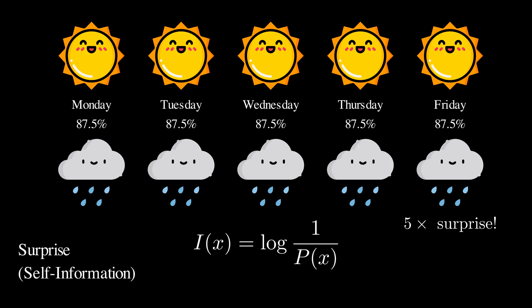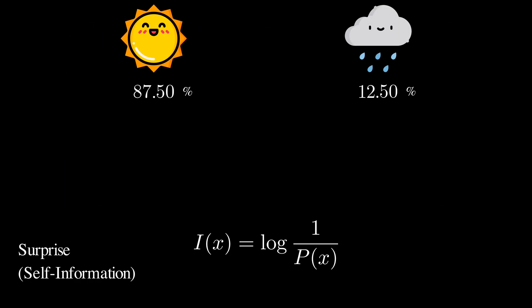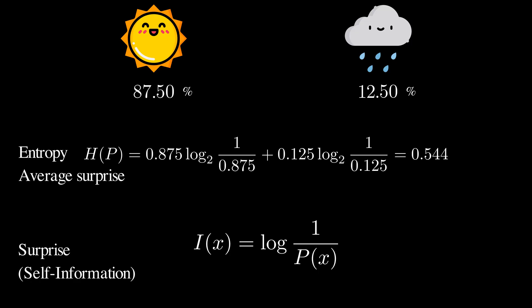But what's the average surprise from this distribution? We compute the expected value of surprise weighted by the probabilities. We call this entropy, a measure of distribution's overall uncertainty.